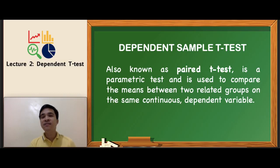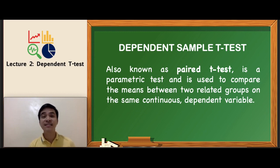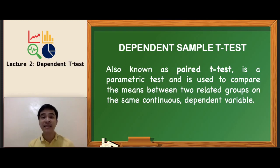Dependent samples t-tests differ from independent t-tests because the samples here are related or matched, meaning you obtain your data before and after on the same group of participants. This is in contrast with the t-test for independent samples, where data is obtained from two independent groups.